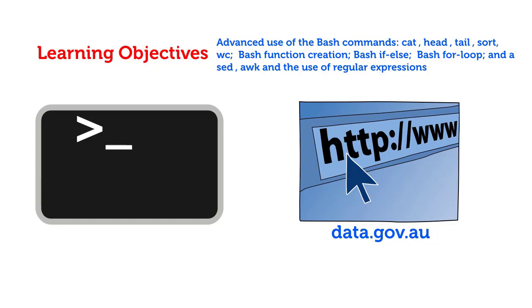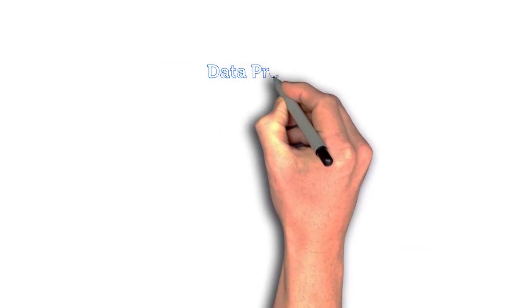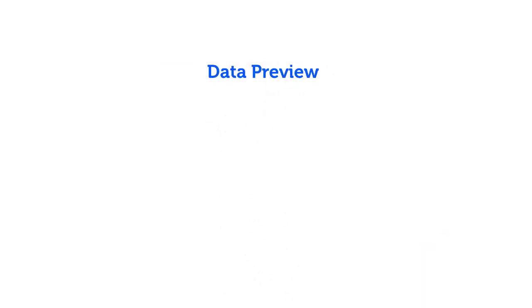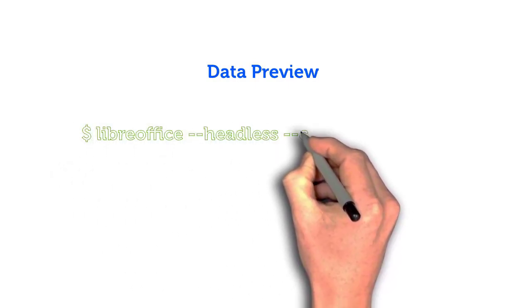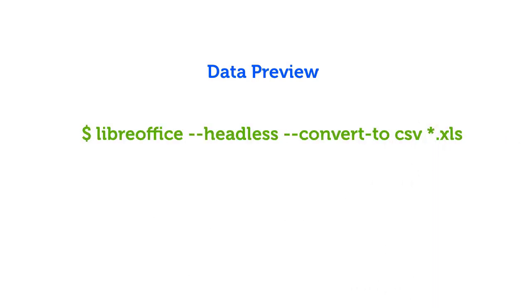Data Preview: Assuming you have saved the downloaded file, the first thing you want to perform is to convert the data into the CSV format — type the following command in the terminal. This command, using the command-line interface of LibreOffice, which comes free with most Linux systems, converts all Excel .xls files in the current folder to .csv. Let's also simplify the name of the file with the mv command.